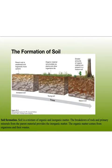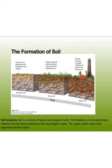Soil is a mixture of organic and inorganic matter. The breakdown of rock and primary minerals comes from the parent material — the base mineral way down at the bottom, like bedrock. As you go further up, you have younger soil. Over time as rock weathers, you go from not much loose material to more and more thickness in the organic layer like humus at the top.